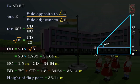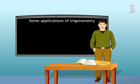If one side and one acute angle are known, we can find the other sides of the triangle using trigonometric ratios. Let us define a few terms which are very often used in finding the heights and distances.